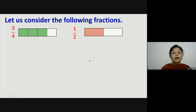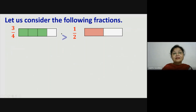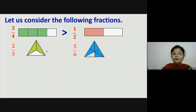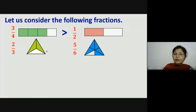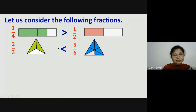Consider three-fourths and one-half. If we are representing them pictorially, we can easily say that three-fourths is greater than one-half. Now taking the fractions two-thirds and five-sixths — if we represent them pictorially, we can easily say that two-thirds is less than five-sixths.